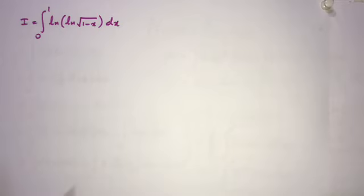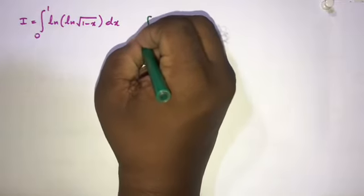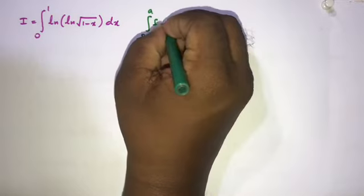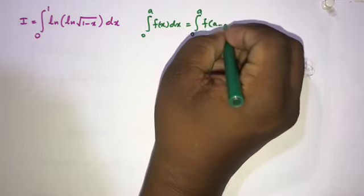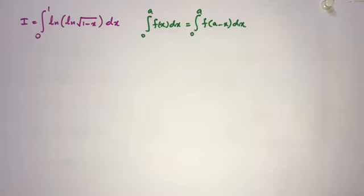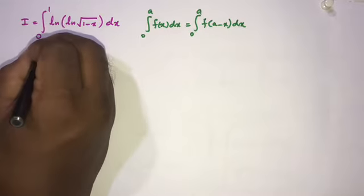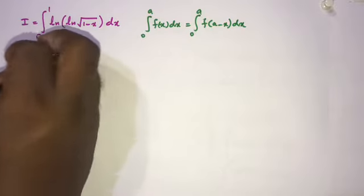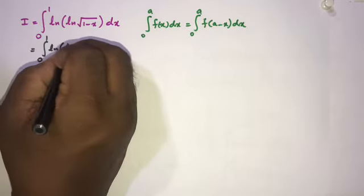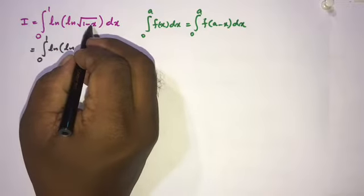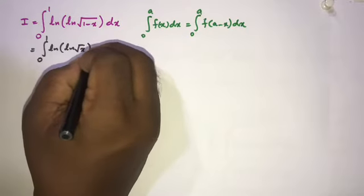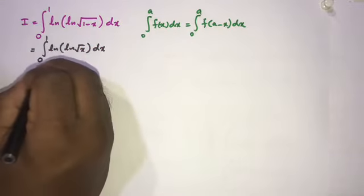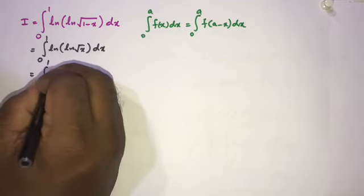We know this property of integration: the integral from 0 to a of f(x) dx equals the integral from 0 to a of f(a-x) dx — King's rule. Applying this, we can write I equals the integral from 0 to 1 of ln(ln(√x)) dx, since 1 minus (1-x) gives x.